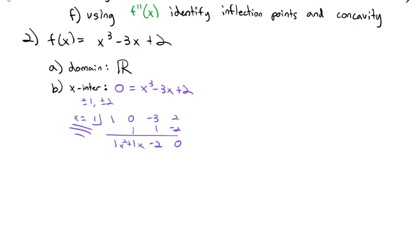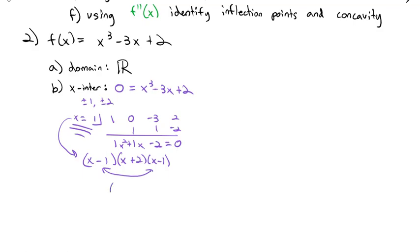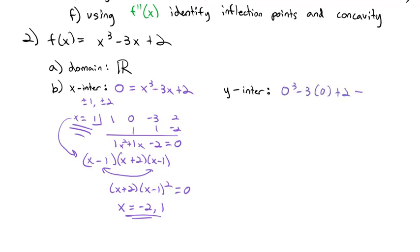Now I have x² + x - 2 = 0, which factors as (x + 2)(x - 1). Combined with the factor we found, we get (x + 2)(x - 1)² = 0. So x equals negative 2 and positive 1 are the x-intercepts. For the y-intercept, we set x = 0: 0³ - 3(0) + 2 = 2. So y = 2 is our y-intercept.